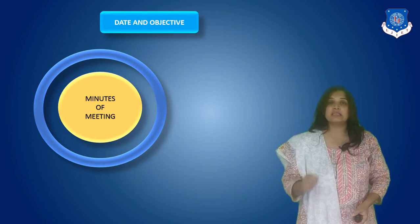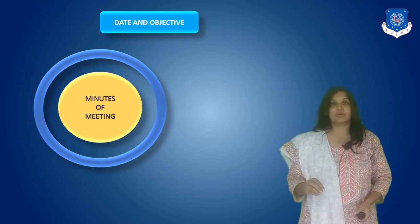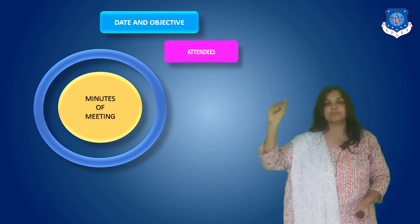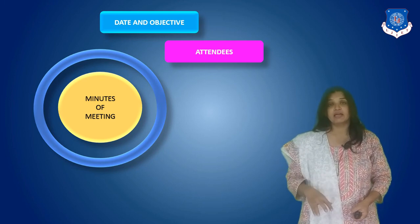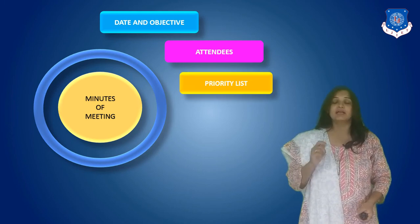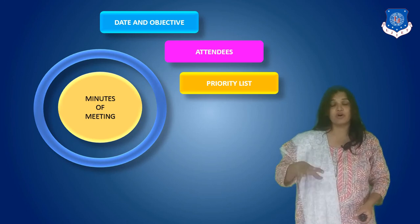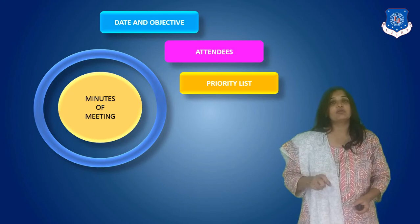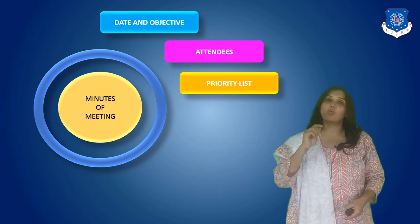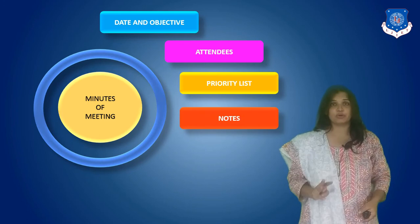In the minutes of meeting, you should write the date of the meeting and the objective — what you want to achieve after the meeting — as a heading. This should be followed by the names of the attendees; it is very important to list down the names of the people who attended the meeting. Then write down the priority list — in other words, repeat the agenda again in the minutes of meeting, listing the topics that were going to be discussed and the original priority list.